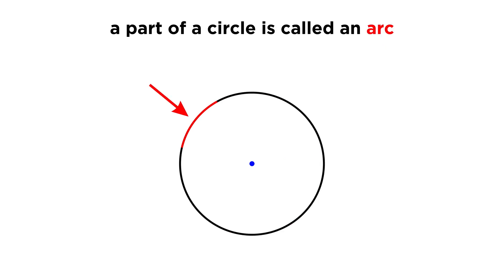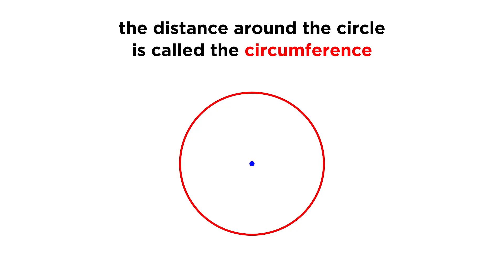Lastly, any part of a circle defined by two endpoints is called an arc. If this arc becomes the whole circle, which represents the distance around the circle, or the perimeter of the circle, this is called the circumference.